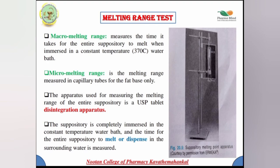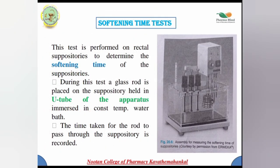The second method is the softening time test, performed on specially designed rectal suppositories to determine softening time. During this test, glass rods are placed into the suppositories held in the apparatus and immersed in a constant temperature water bath. The time taken for the rods to pass through the suppositories is recorded. This can be carried out at various temperatures from 35.5 to 37°C as a quality control check and can be studied as a measure of physical stability over time. The water bath with both cooling and heating elements should maintain control within 0.1°C.